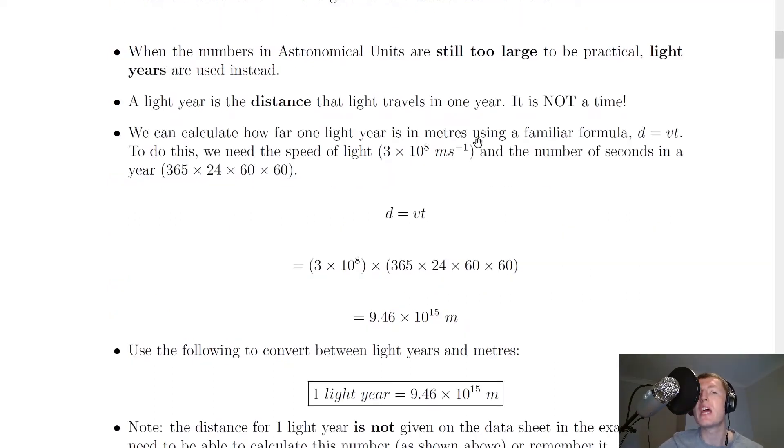There's another unit we can use instead of meters, which is called the light year. When the numbers in astronomical units are still too large to be practical, light years are used instead. A light year is the distance that light travels in one year. It is not a time. Just remember that because the word year sounds like a time, it's not a time in this case—it's a distance.